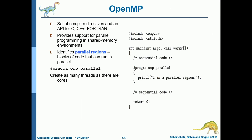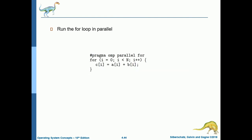OpenMP is a set of compiler directives and an API for C, C++, and Fortran that provides support for parallel programming in shared memory environments. It identifies parallel regions — blocks of code that can run in parallel — using the directive #pragma omp parallel. This code creates as many threads as there are cores; if the system has two cores, it creates two threads. There is also a directive to run a for loop in parallel.